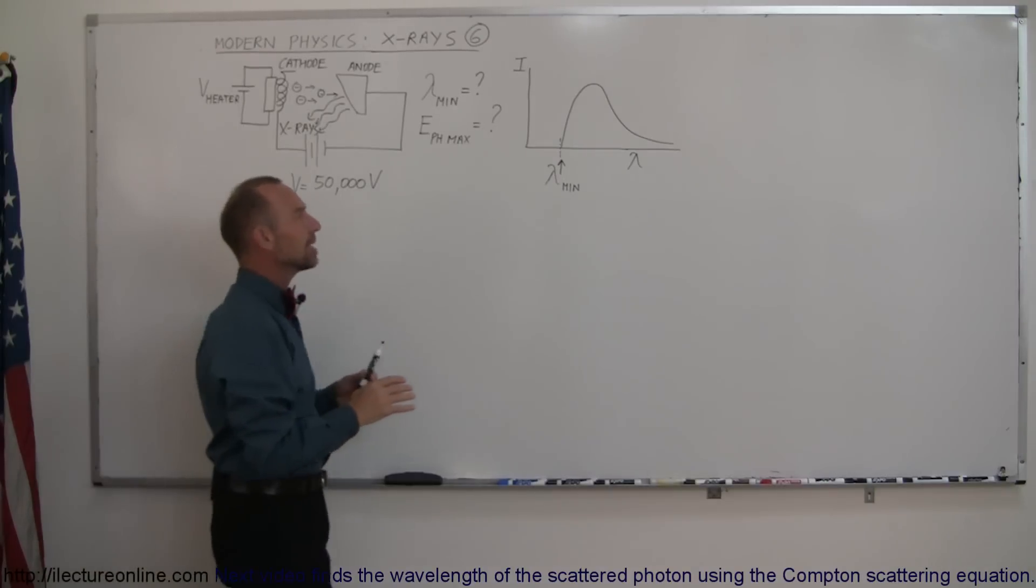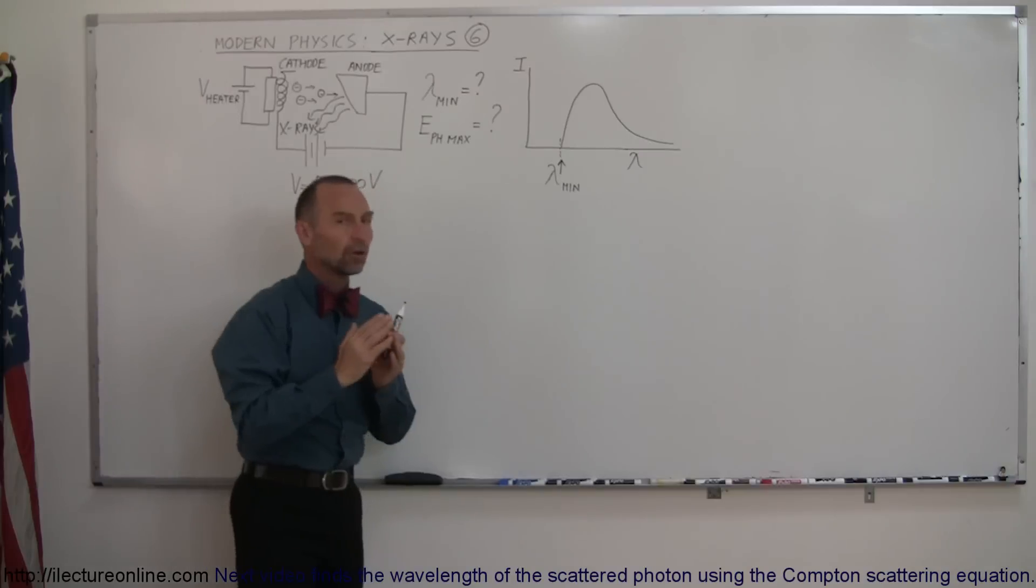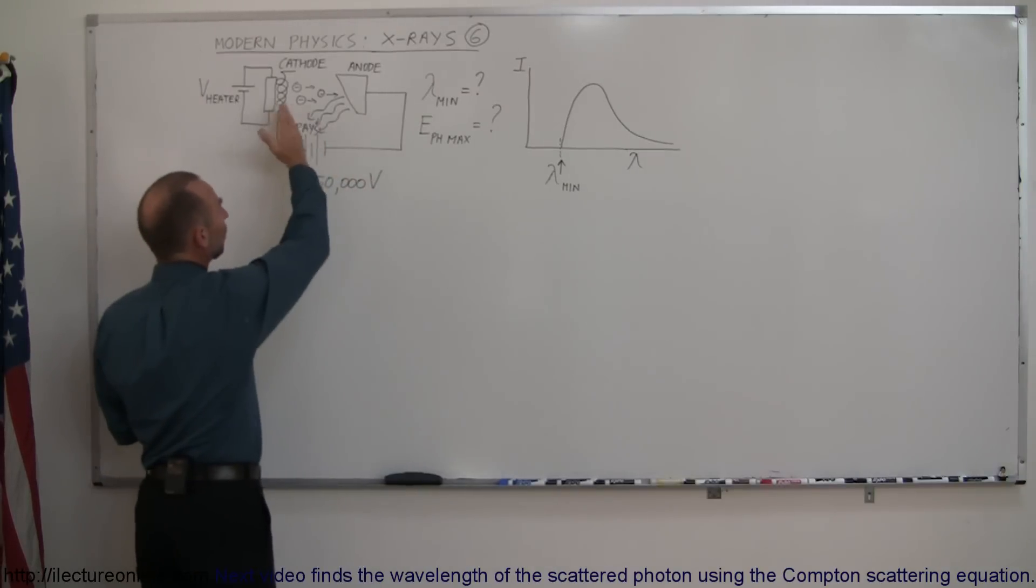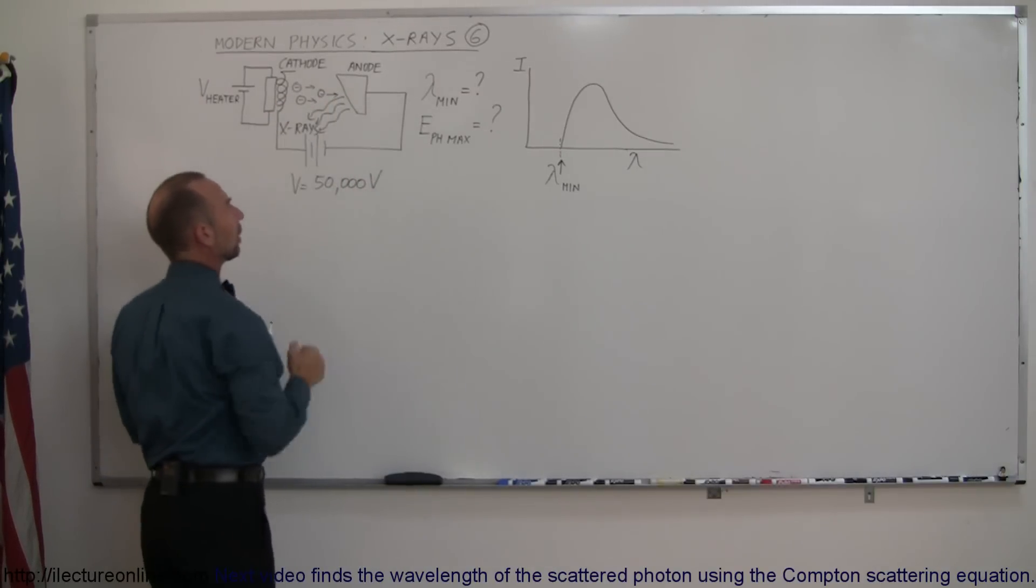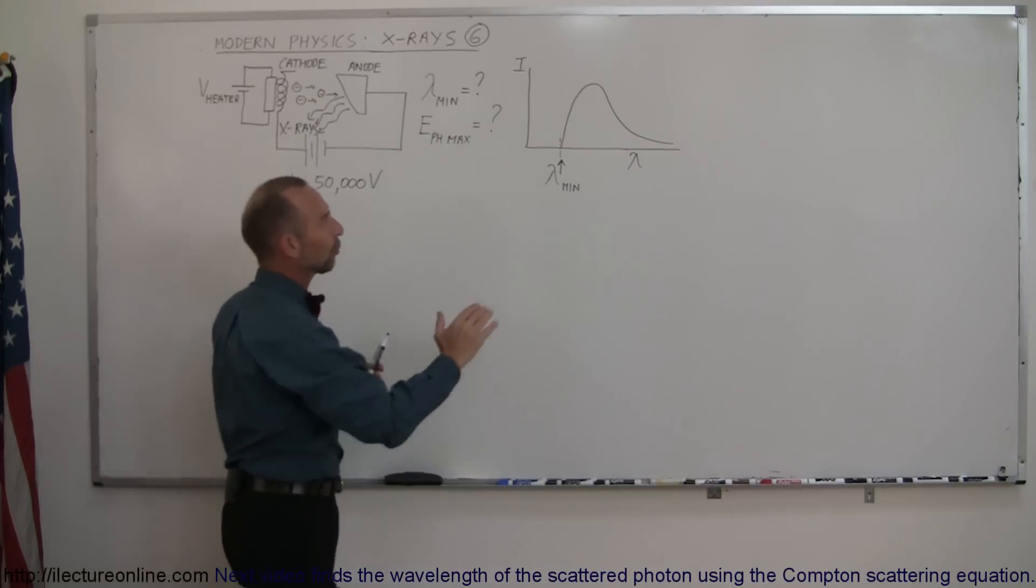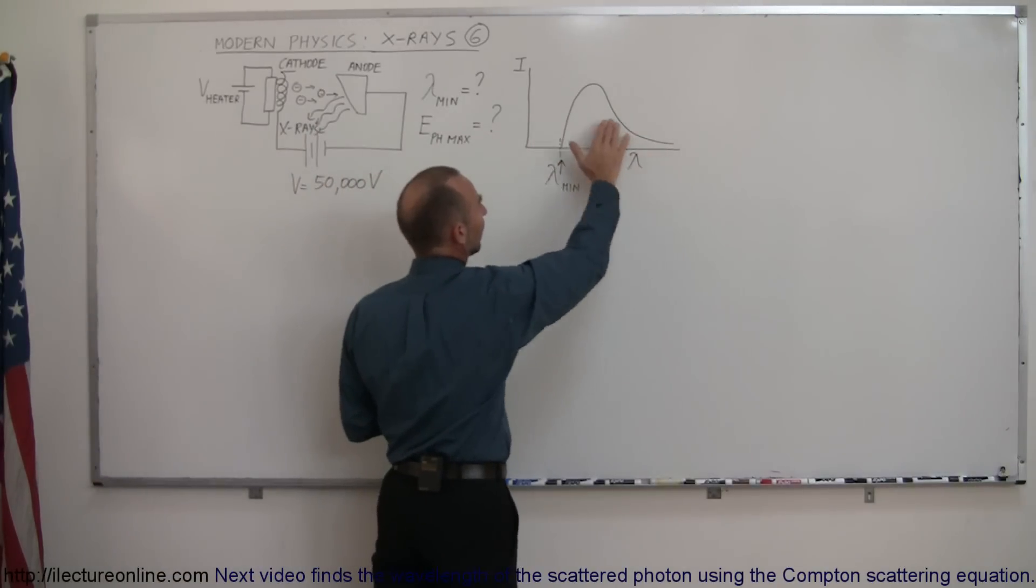And just to give you kind of an idea, of course not all of the energy of each electron will be completely converted into an X-ray. And so therefore the wavelength will take on kind of a distribution.